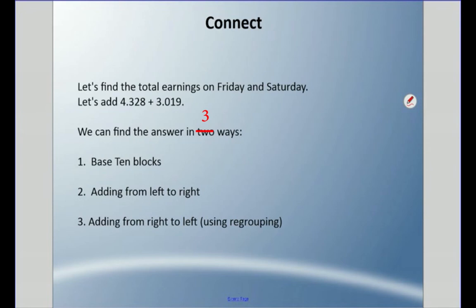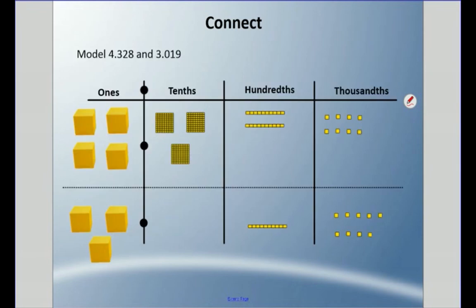We're going to look at three strategies for adding these two numbers: we're going to use base ten blocks, we're going to add from left to right, and then we're going to add from right to left using regrouping. First, let's look at base ten blocks, and we're going to model four and three hundred twenty-eight thousandths and three and nineteen thousandths.